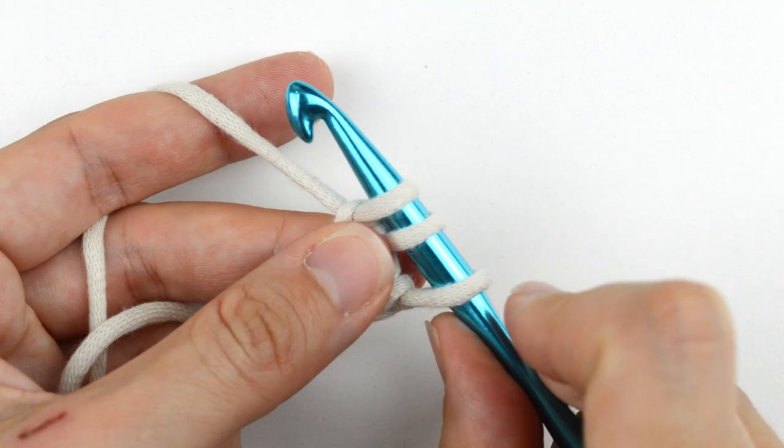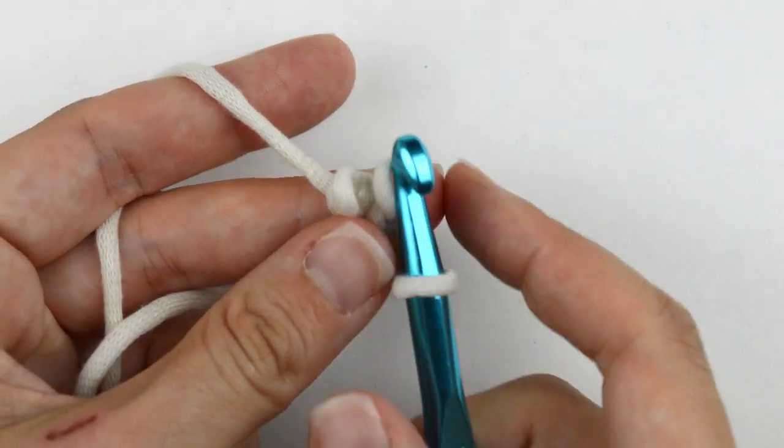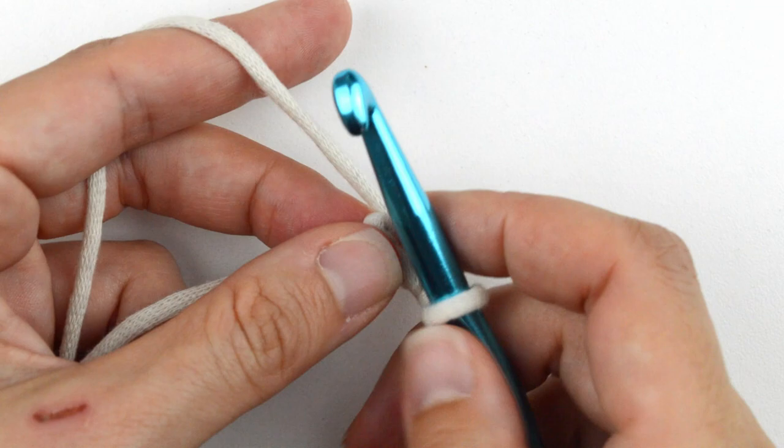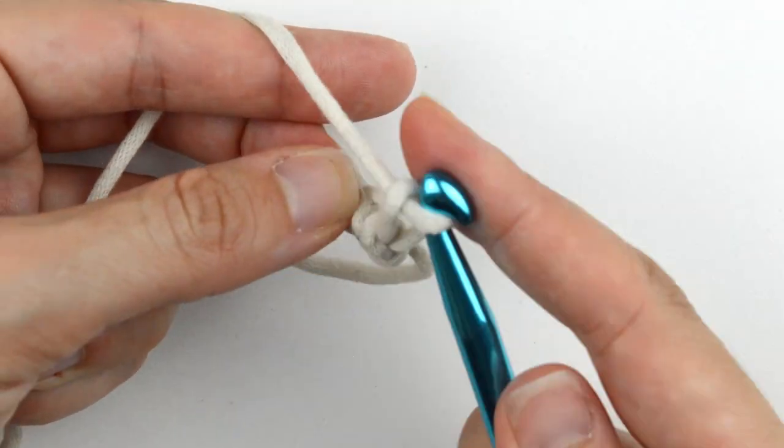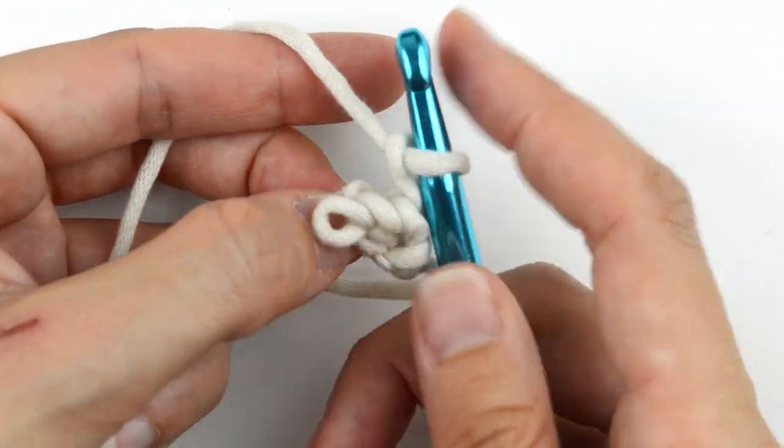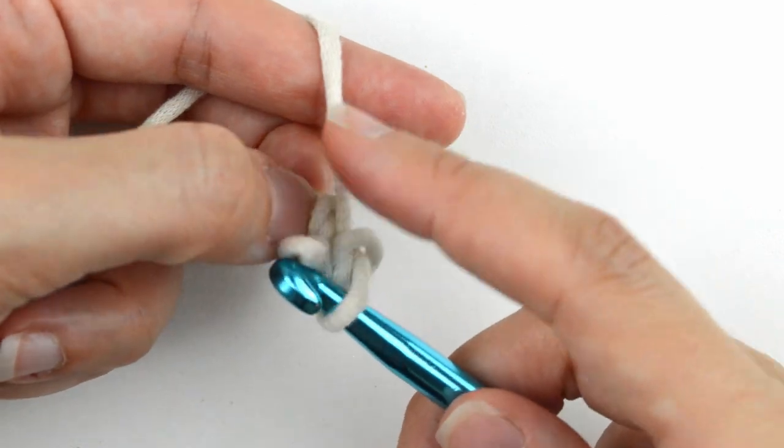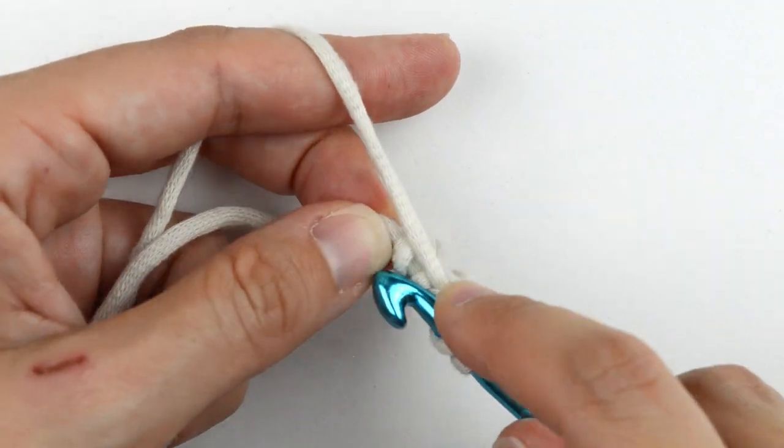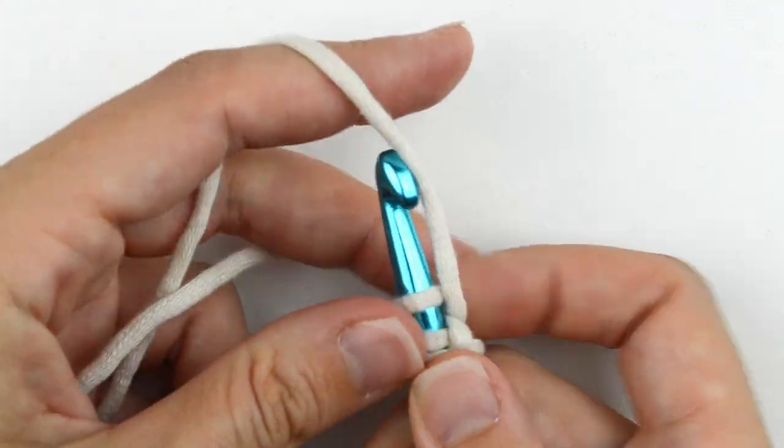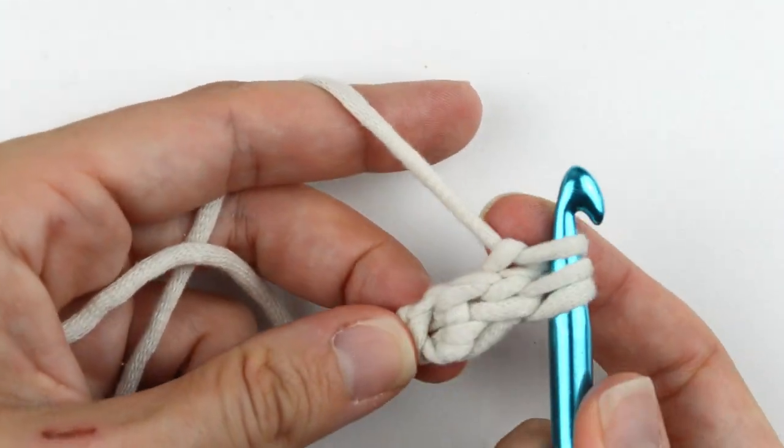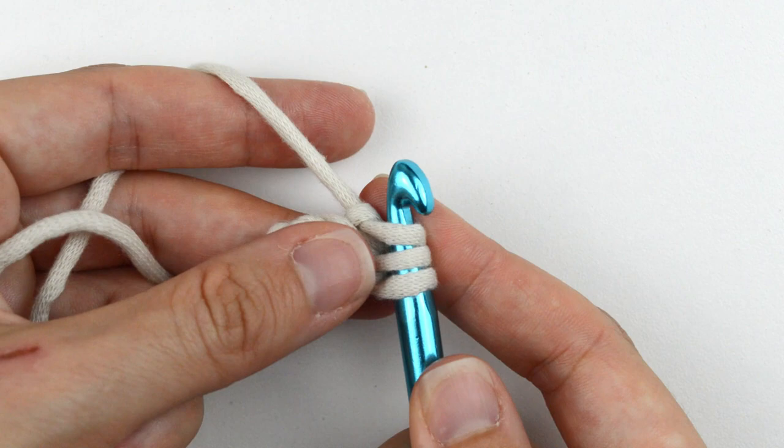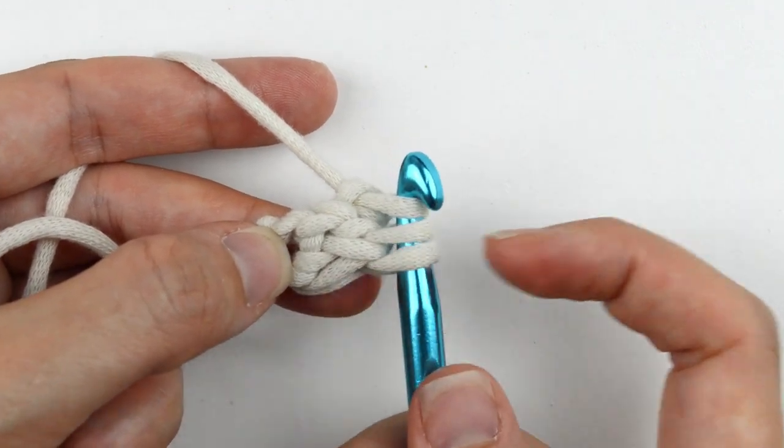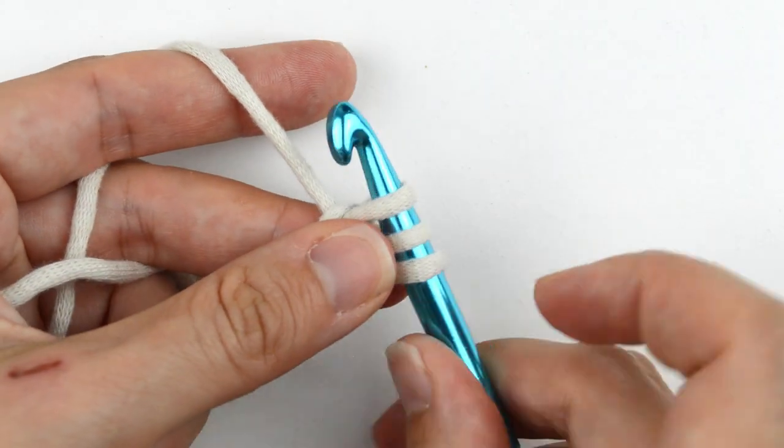I do the same thing for this and every row. I pull off every loop except for the last one, then I yarn over and pull through. Pick up the next loop, yarn over and pull through. And pick up the next loop, yarn over and pull through. I'm going to keep doing this several more times so you can just absorb what I'm doing.